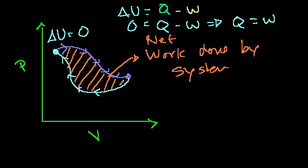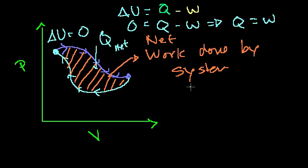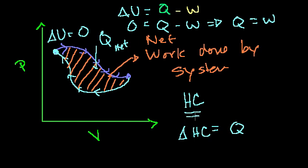So if you have any area here, some net heat was added to the system. Some heat was added going one way, and some heat was probably taken out going the other way, but you have some net heat added. And I use that argument to say why heat isn't a good state variable. If I defined some state variable called 'heat content,' I would say the change in heat content should equal the change in heat — if I'm adding heat to the system, my heat content should go up.